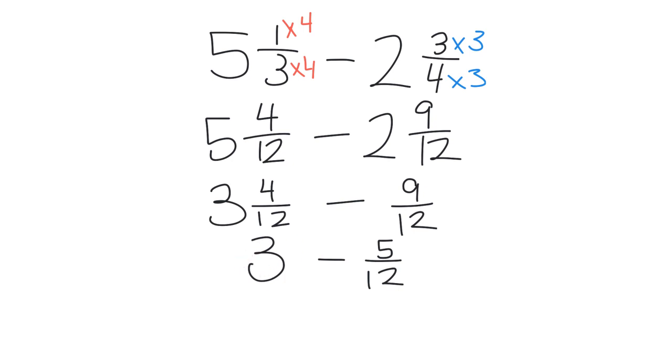At this point, if we're thinking about a number line, and we're at the number 3, and we're going to go backwards 5 twelfths. 1, 2, 3, 4, 5 twelfths. Where are we going to be?